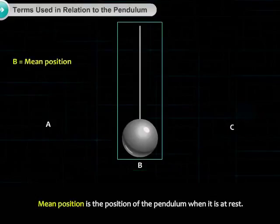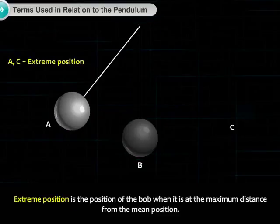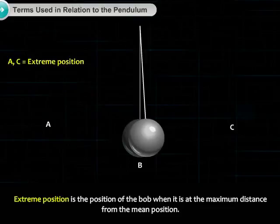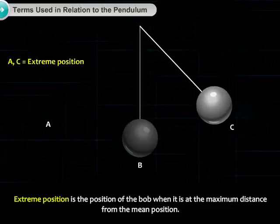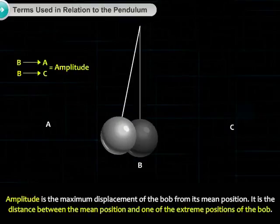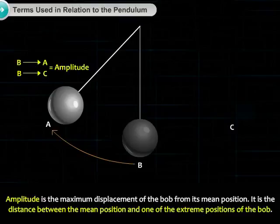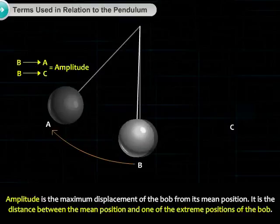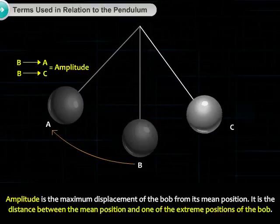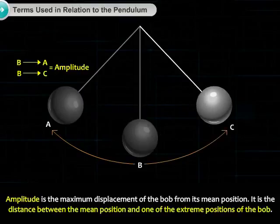Mean position is the position of the pendulum when it is at rest. Extreme position is the position of the bob when it is at the maximum distance from the mean position. Amplitude is the maximum displacement of the bob from its mean position — it is the distance between the mean position and one of the extreme positions of the bob.